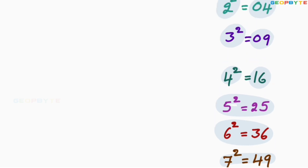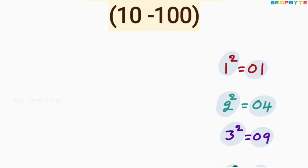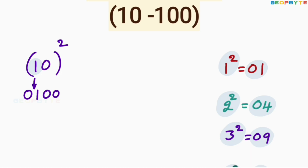After remembering this, first let us take 10 square. First you square the first number 1: 1 square is 1, write in terms of two digits — 01. 0 square is 0, write as 00. Then you multiply 1 with 0: 1 into 0 is 0, 0 into 2 equals 0. Leave the first space, write the 0 here, then add these two values: 0, 0, 1. Therefore, 10 square is equal to 100.